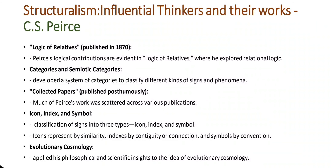Next is Logic of Relatives, published in 1870. Peirce's logical contributions are evident here, as he explored relational logic. This work influenced later developments in mathematical logic and provided a basis for understanding the relational nature of signs. Peirce also developed a system of categories to classify different kinds of signs and phenomena, which became integral to his semiotic theory, offering ways to understand the diverse ways signs function.